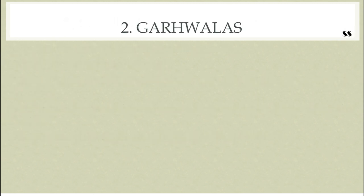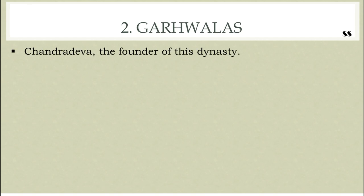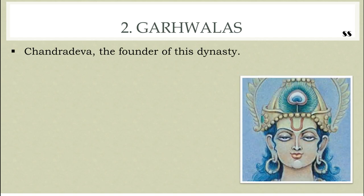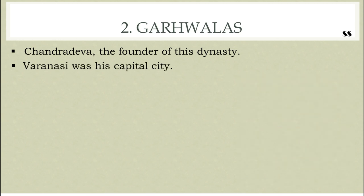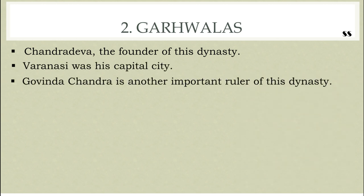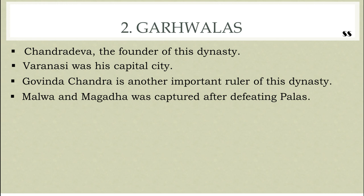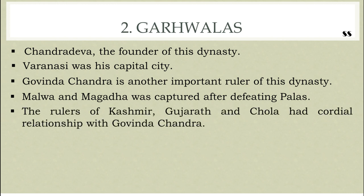The next dynasty was the Gharvalas. Chandra Deva, the founder of this dynasty, ruled North India keeping Varanasi as his capital city. Govinda Chandra is another important ruler of this dynasty. He extended his rule to Malwa and Magadha by defeating the Palas. He also defeated the king of Kalinga and Odisha. The rulers of Kashmir, Gujarat, and the Cholas had cordial relationships with Govinda Chandra.